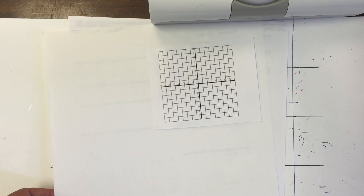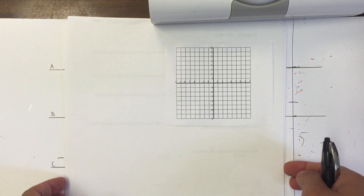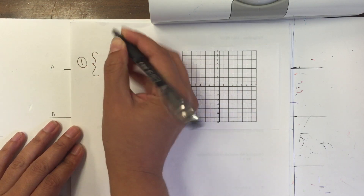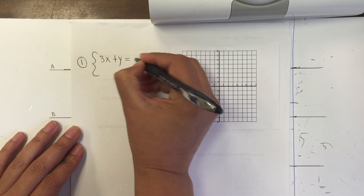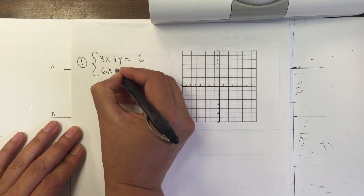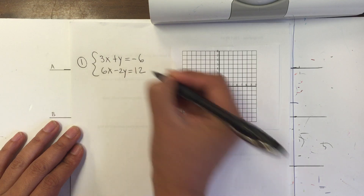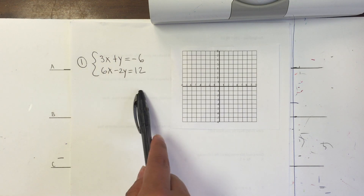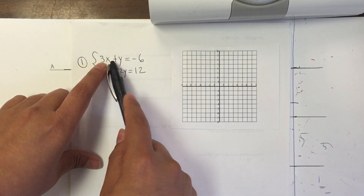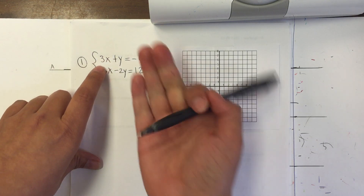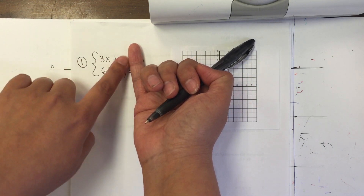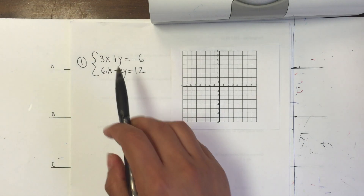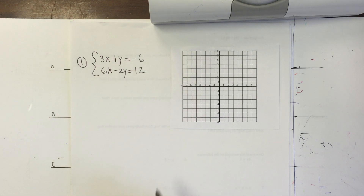Let's start with the following example. We have a system of equations: 3x plus y equals negative 6, and 6x minus 2y equals 12. We notice that these two equations are in standard form. Standard form means that my x and my y are on the same side of my equal sign. Yesterday, we learned to isolate y to find the slope intercept. Today is to find the x and y intercepts.